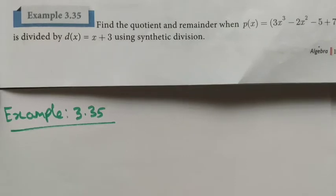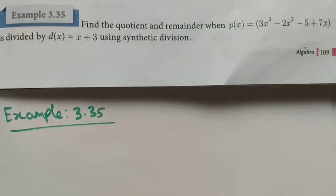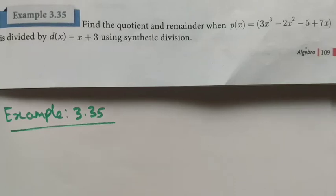Hi students, class 9 examples on 3.35 — find the quotient and remainder. p(x) is given as 3x³ - 2x² - 5 + 7x, divided by d(x) = x + 3, using synthetic division. This is another method to find the quotient and remainder. One method is long division; another is the synthetic division method. We are going to solve this sum using the synthetic division method.